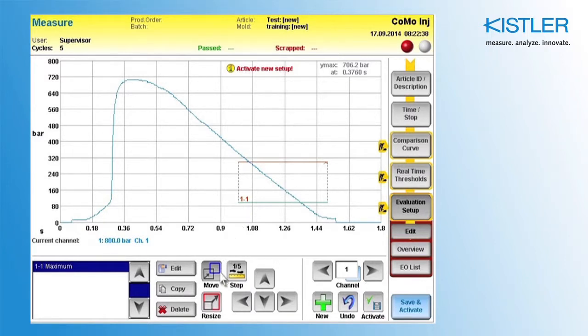Use the Move button and the arrow keys to move the evaluation object. You can position it even more accurately with the 1 5th Step button. If it is necessary to change the size, this can be done using the Resize button and the arrow keys.